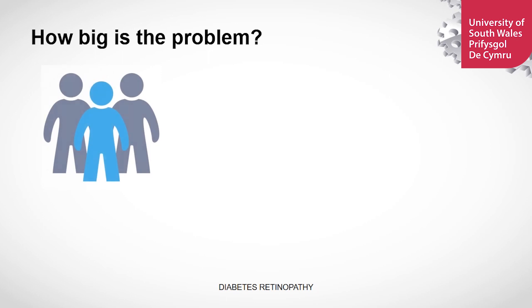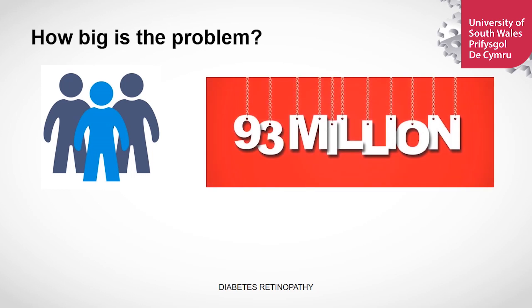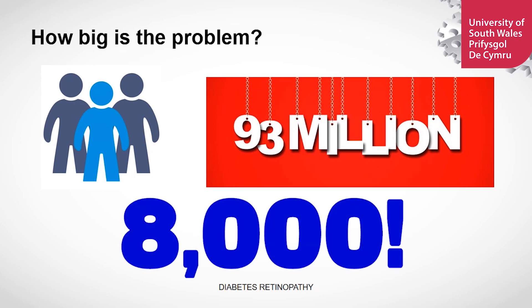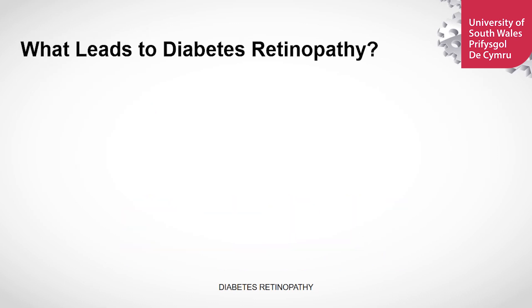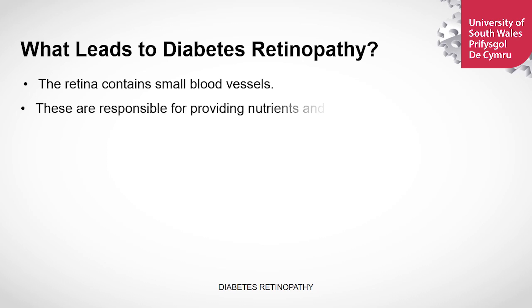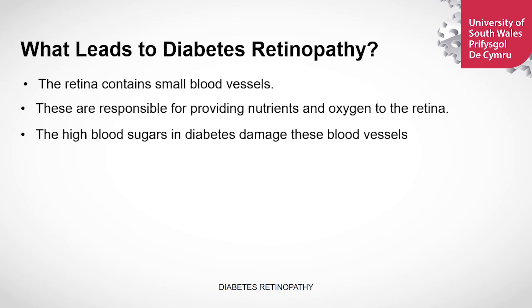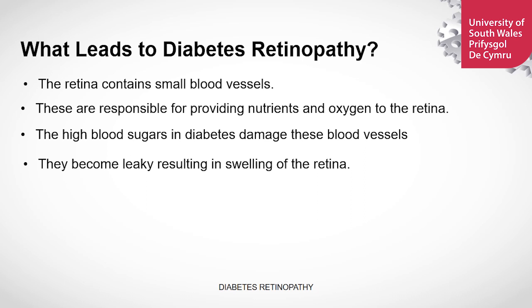One in three of every patient with diabetes has diabetic retinopathy, and 93 million people in the world suffer from this disease. Eight thousand eyes are lost every year as a result of diabetic retinopathy. The retina contains small blood vessels and these are responsible for providing nutrients and oxygen to the retina. When the person has high blood sugars like in diabetes, the high blood sugars damage these blood vessels and these become leaky and they swell in the retina. The blood vessel may also get blocked.